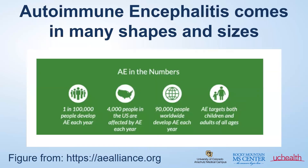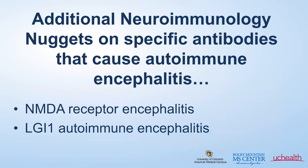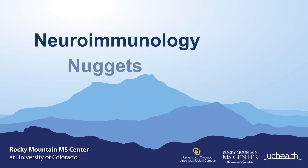Autoimmune encephalitis can look very different between individuals and comes in many different flavors, shapes, and sizes. It can affect small kids to the elderly, both men and women. While each individual antibody may be rare, when you look at the antibodies altogether, it's more common than you think — with essentially one in 100,000 people affected each year, which is basically 4,000 people in the United States each year. Thank you for tuning into this episode of Neuroimmunology Nuggets. There is more to come in other episodes on specific antibodies that cause autoimmune encephalitis. Thank you again.